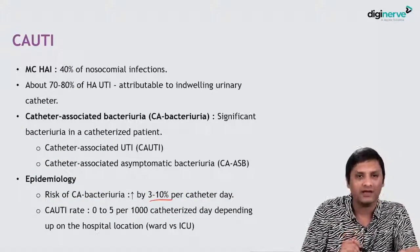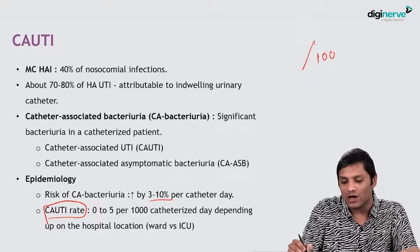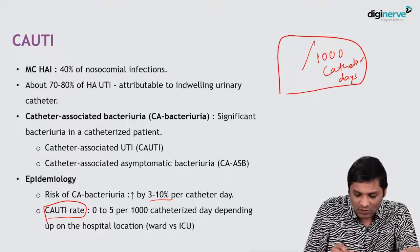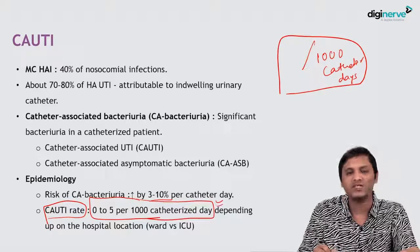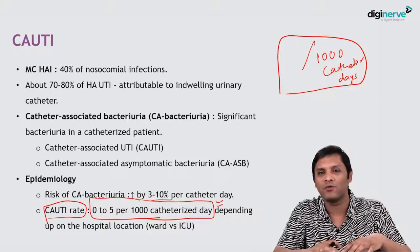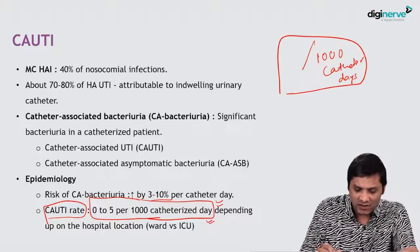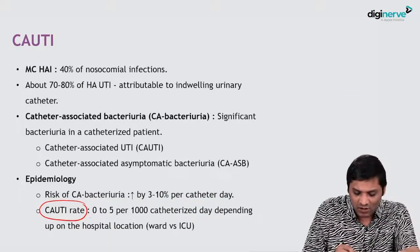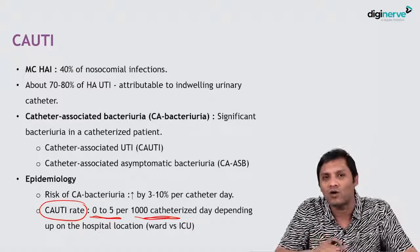The CAUTI rate is always expressed per 1000 catheter days. The overall CAUTI rate reported worldwide as well as in India is 0 to 5 per 1000 catheter days. This is the overall prevalence of CAUTI in hospitals. The rate will vary by location — in a ward the CAUTI rate may be less, while in an ICU setup it may be higher.